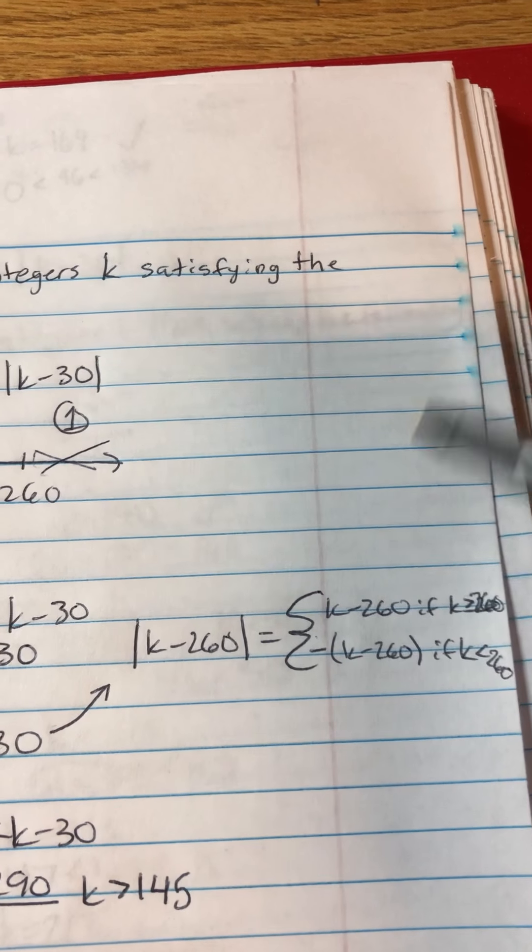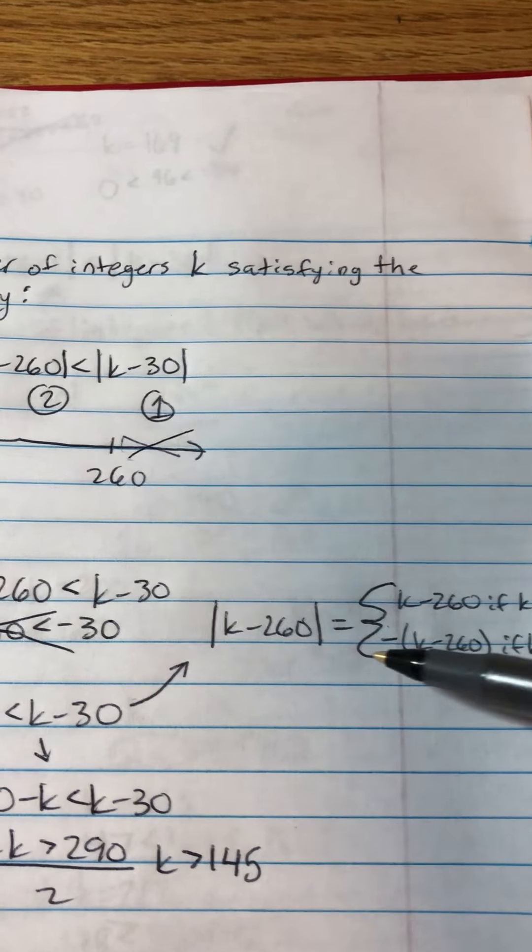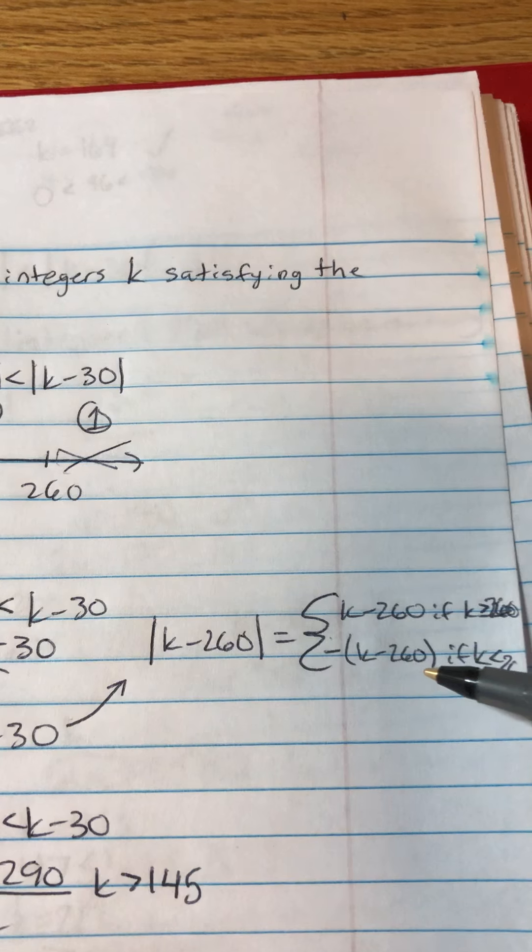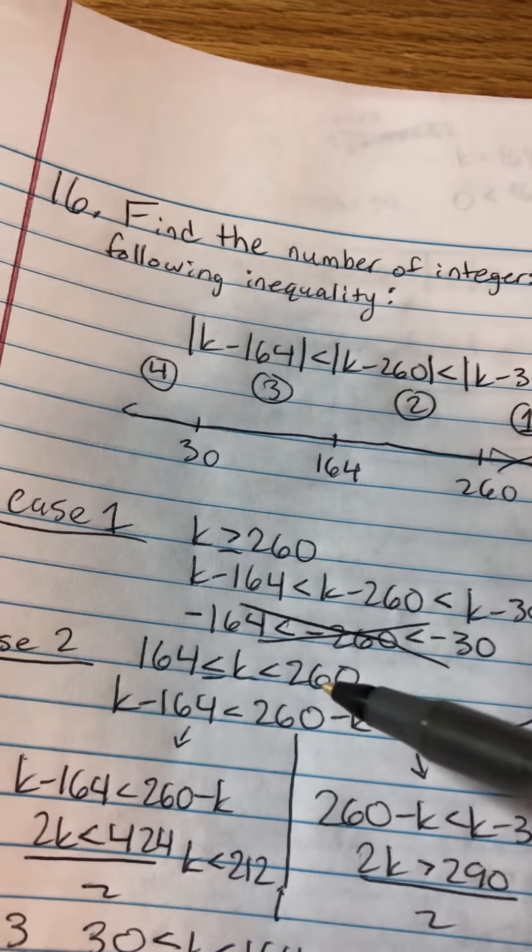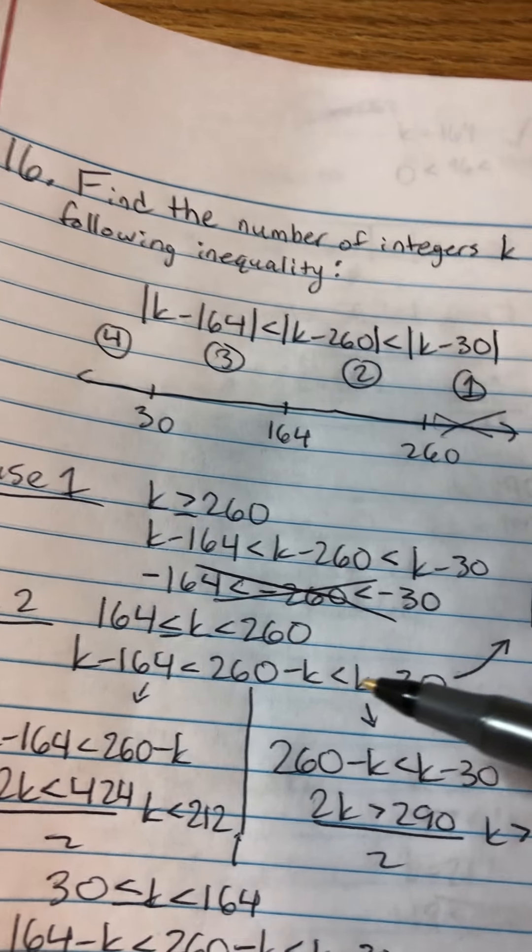And the reason you get 260 minus k is because for the absolute value of anything, it either equals the positive absolute value if k is greater than or equal to that zero, but it turns negative if k is less than that zero. And since k is less than 260, that means it becomes the negative, which is 260 minus k.